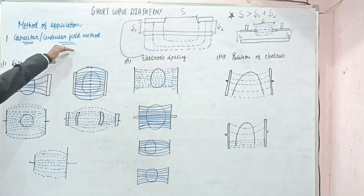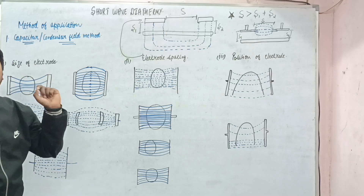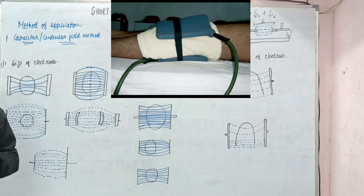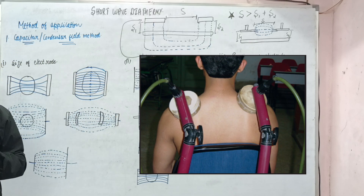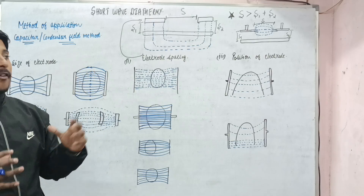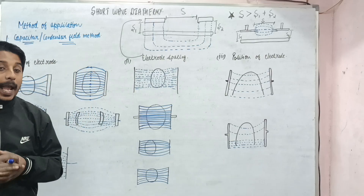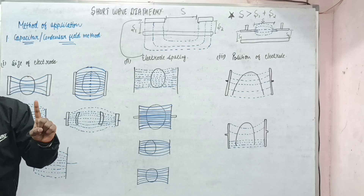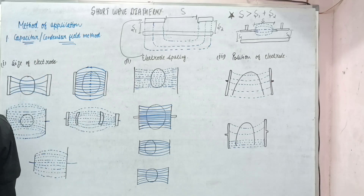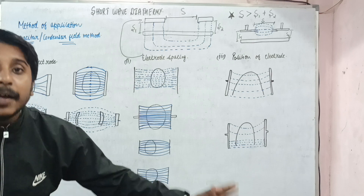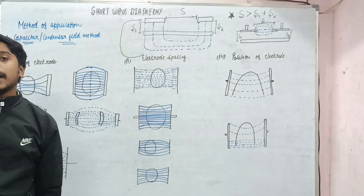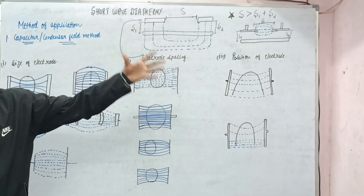First is the capacitor or condenser field method. Here we use electrodes for SWD application — either a pad electrode or a disc electrode. The pad electrode requires some separation done by a towel, while the disc electrode has air-layer spacing. The electric lines of force passing from these electrodes pass easily through material of high dielectric, and our body has a very high dielectric. So it is very easy for these lines of force to pass through the body and give a heating effect.